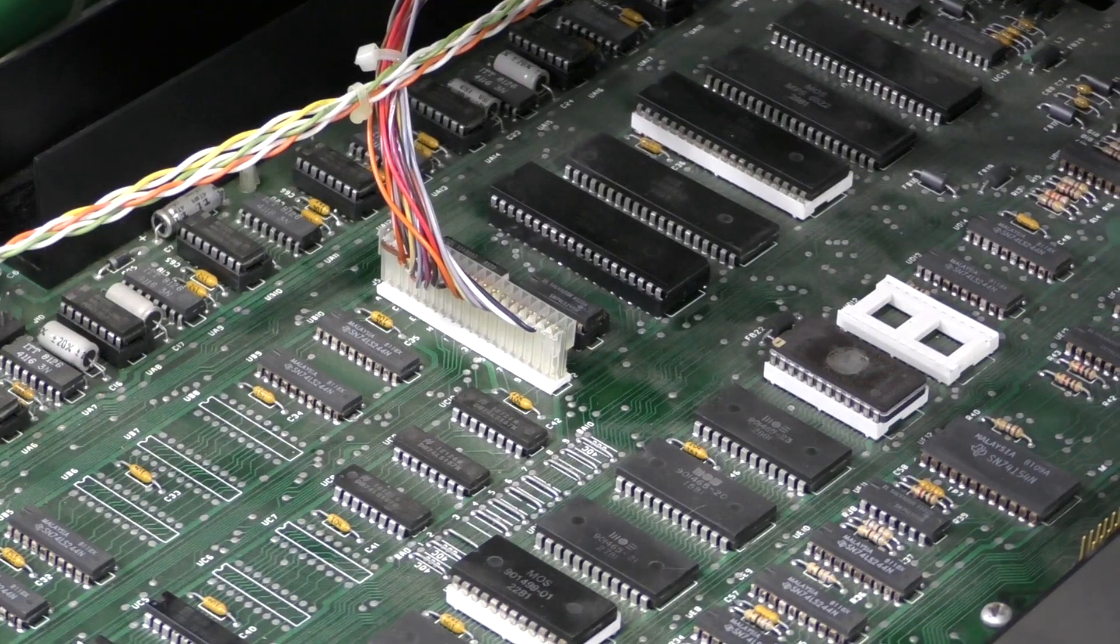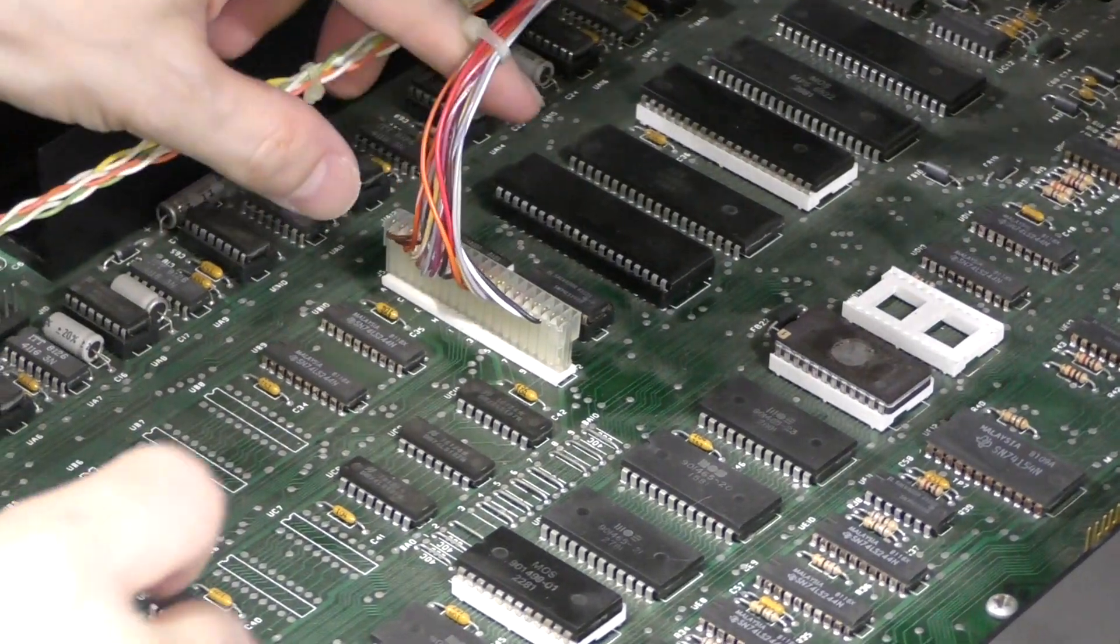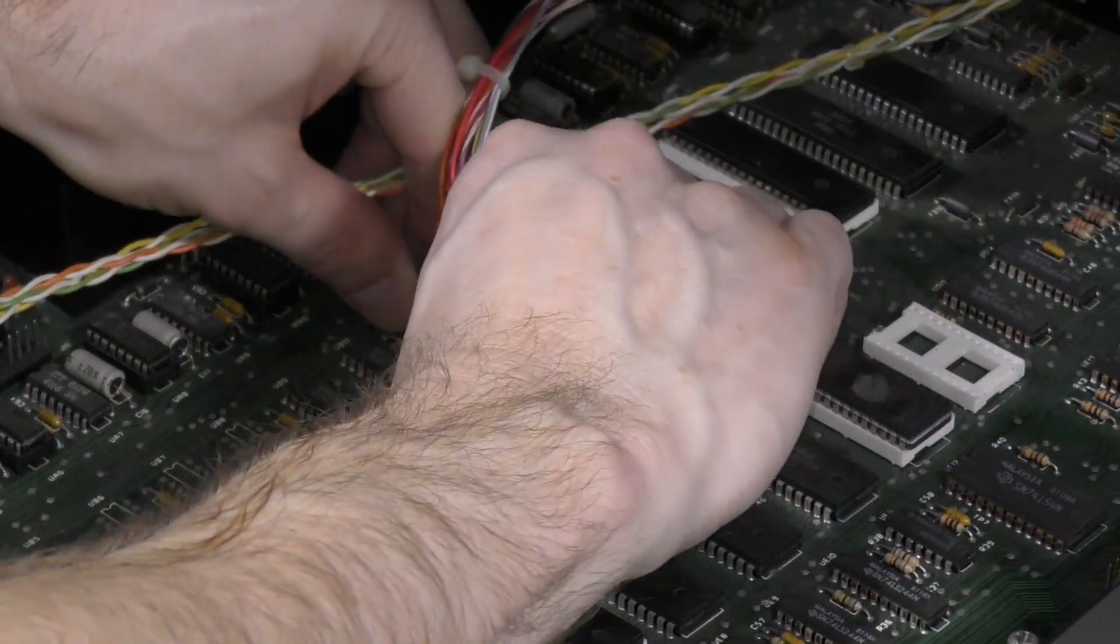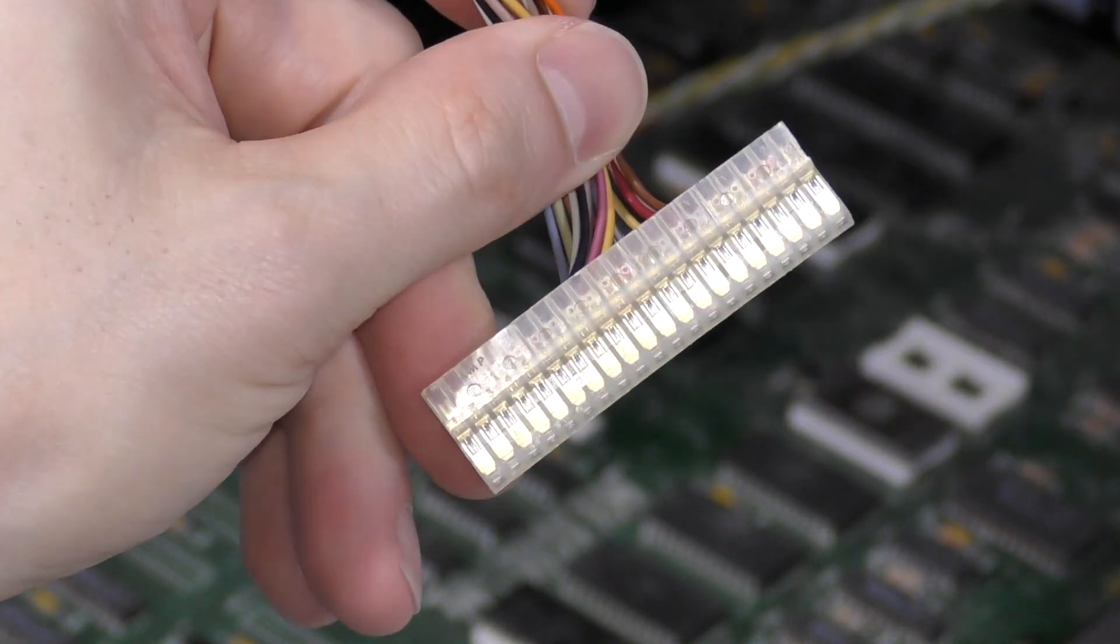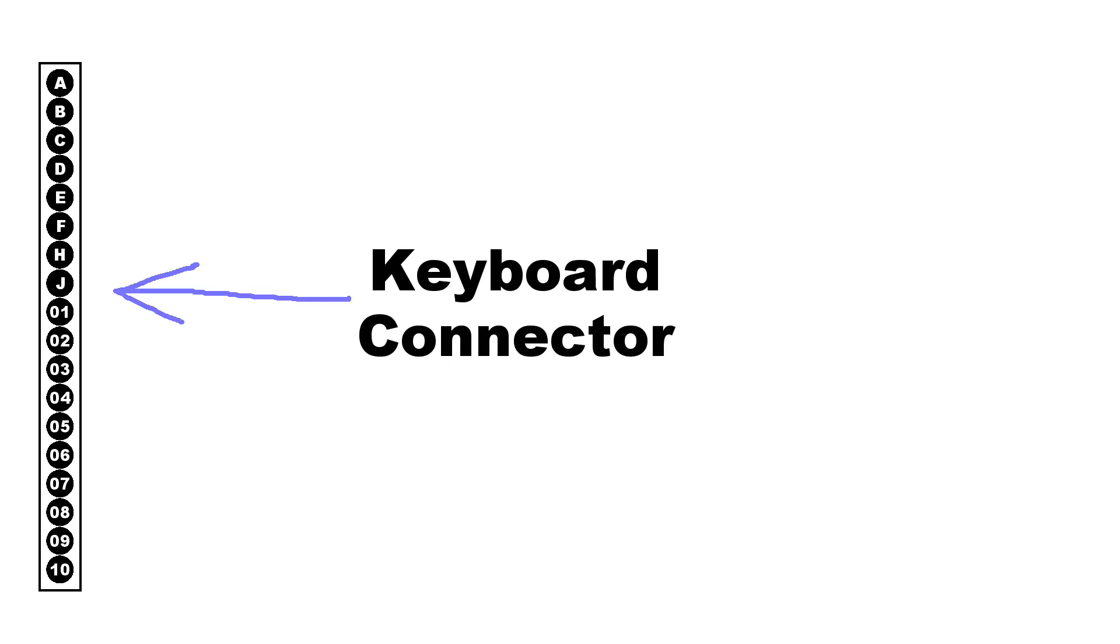Now it's time to tackle the keyboard problem. But before I begin, I think it's important to show you how the keyboard on this computer actually works. That way you'll better understand my troubleshooting processes. When I unplug the keyboard, you'll notice there are a lot of wires. In fact, there are 17 wires total. But there are a lot more than 17 keys on the keyboard. So you may be wondering how this works.